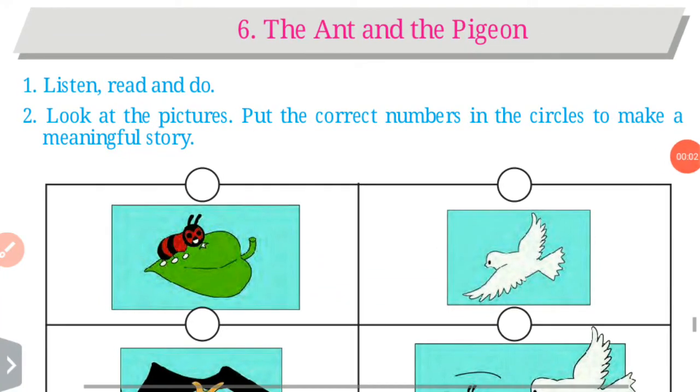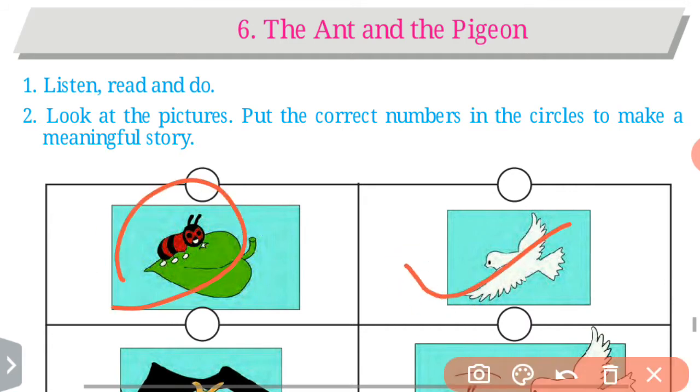Hello kids, in today's class we are going to learn first standard English unit 6, lesson number 6, the ant and the pigeon. As you can see here, this is ant and this is pigeon.